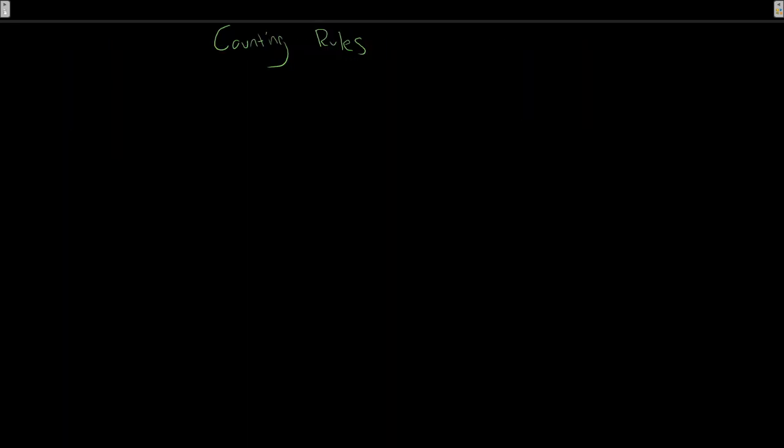Next we're going to take a look at counting rules. As we've seen with classical probabilities, we need to work out how many possible outcomes exist in order to get a collectively exhaustive list. Sometimes this is simple — flipping a coin or rolling a dice — but that's not always the case. We'll introduce rules to help us work out the total number of possible outcomes.